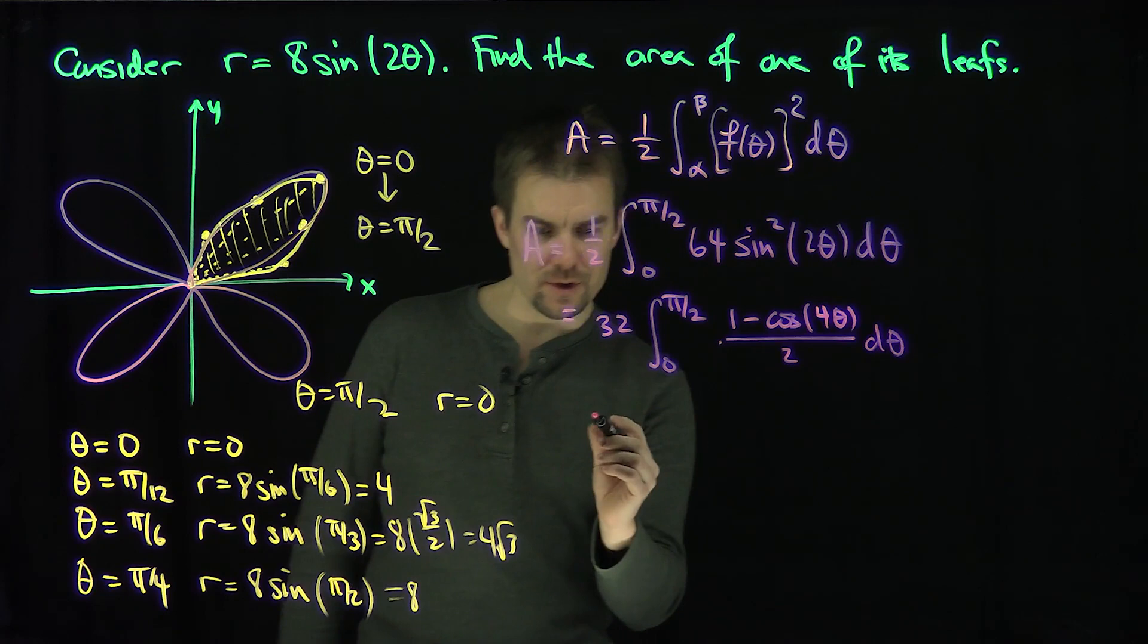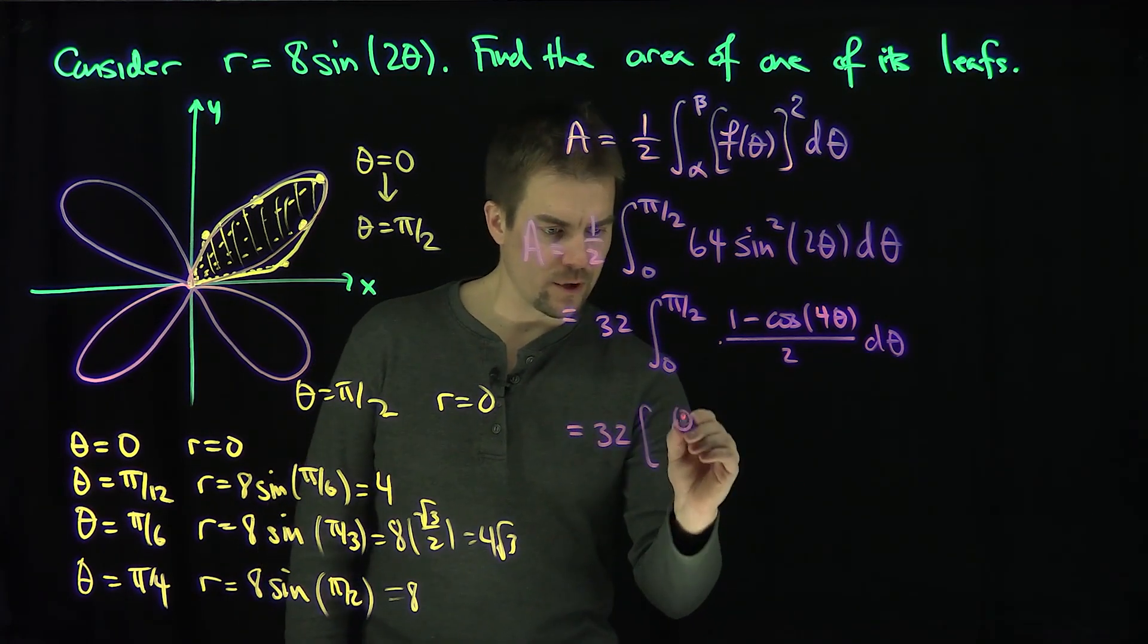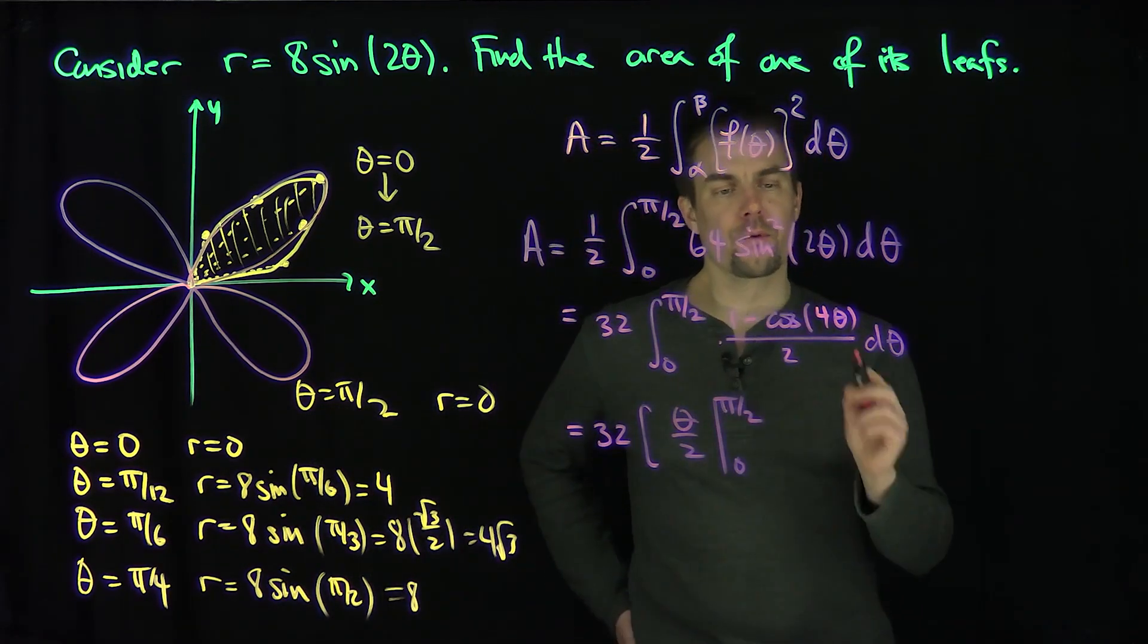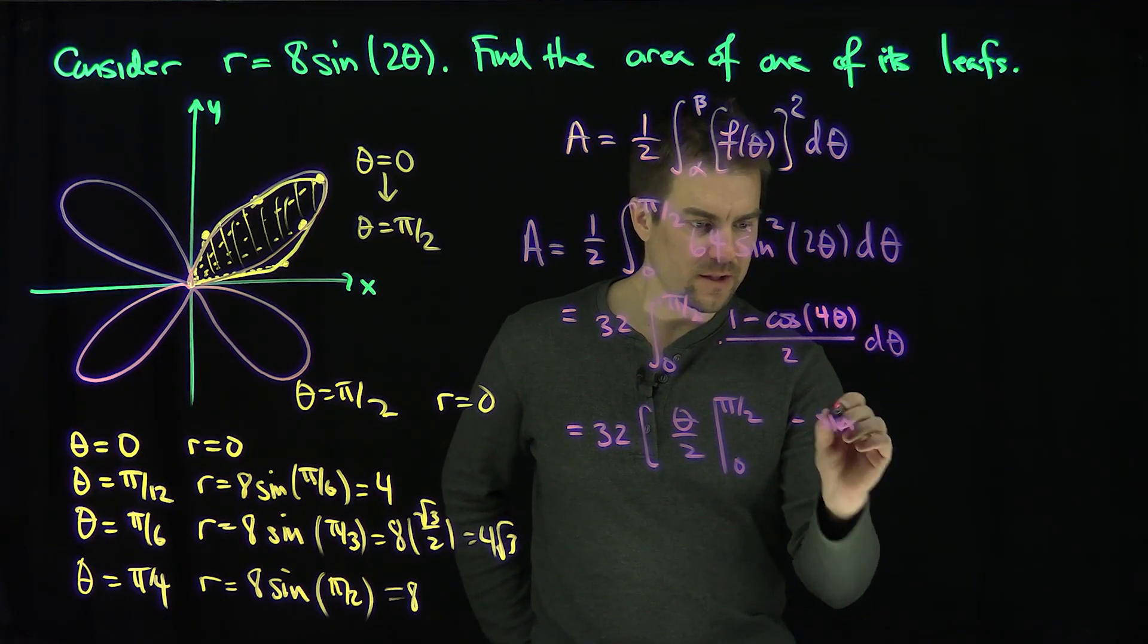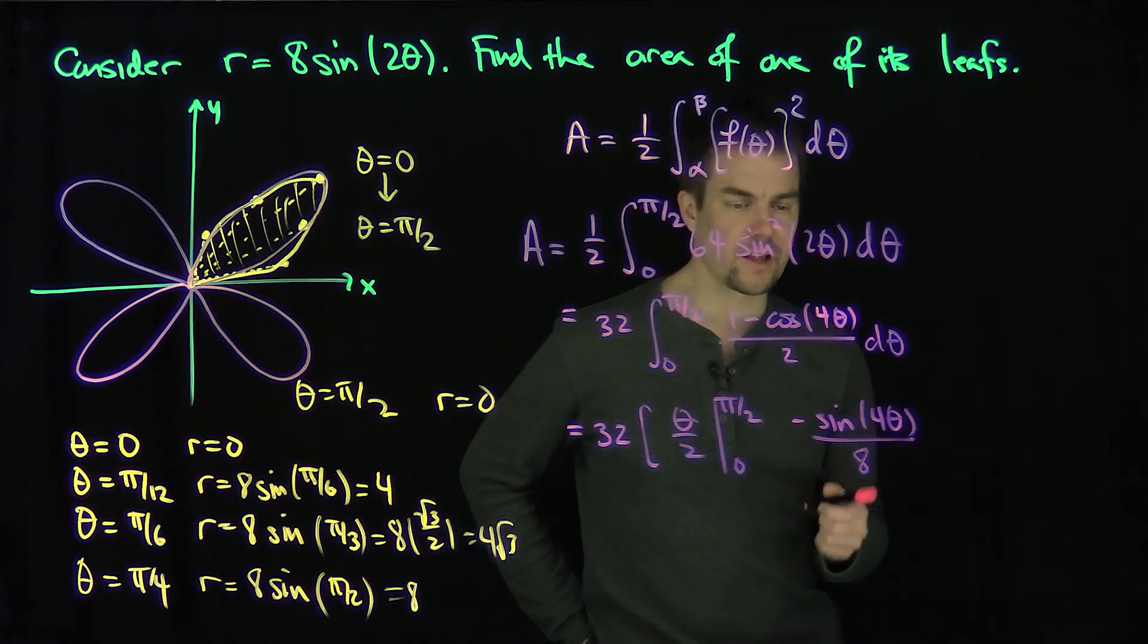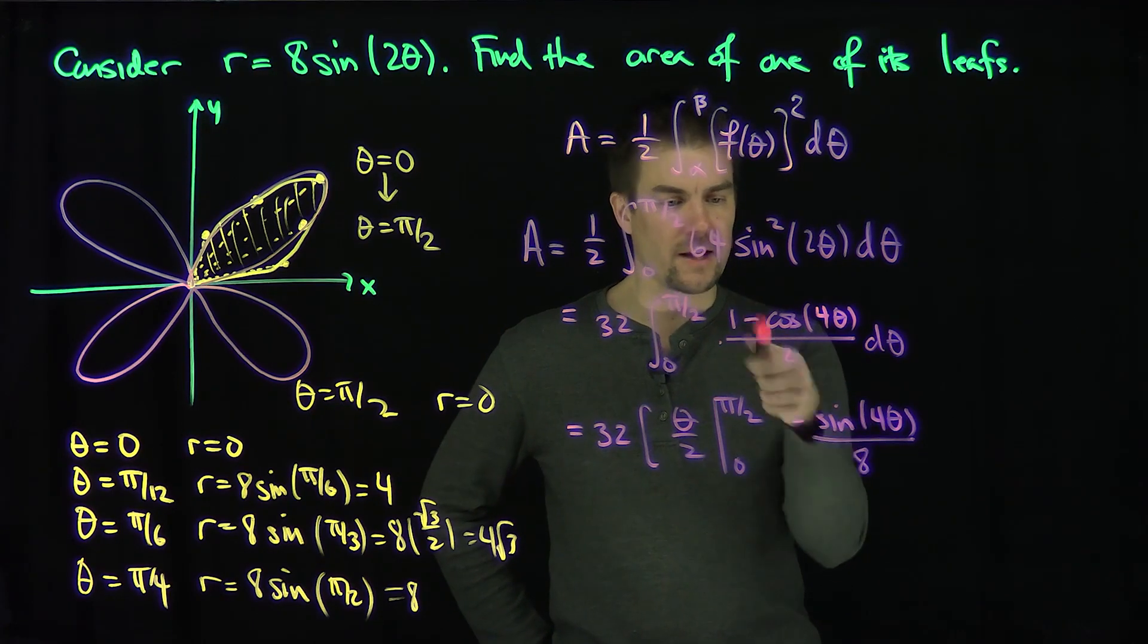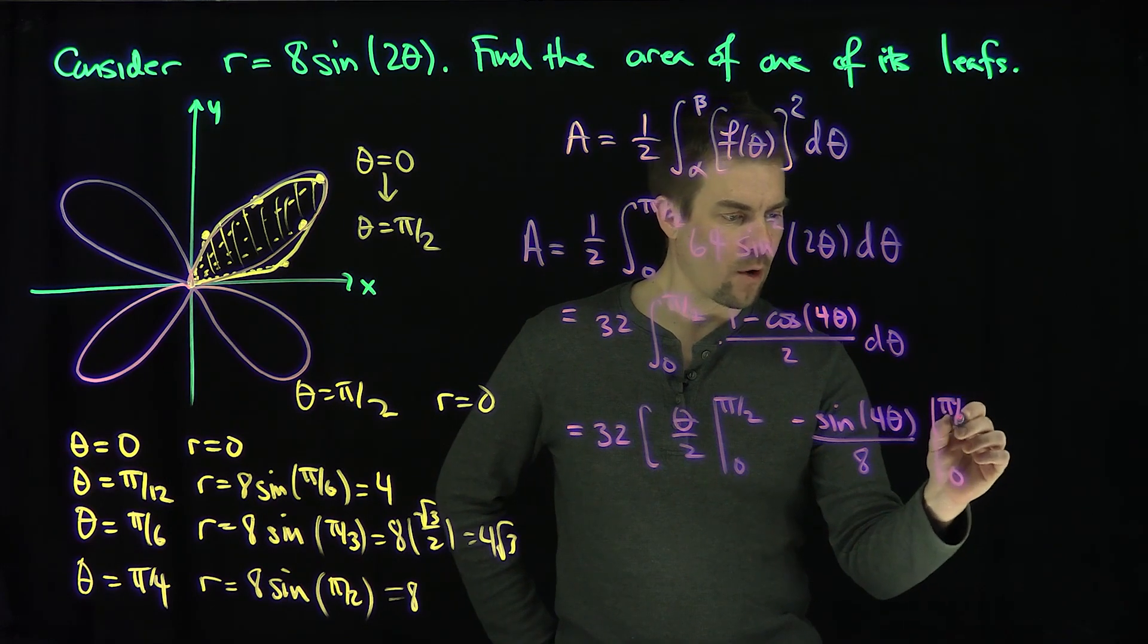So this integral is going to be easy to do. This is going to be 32 times theta over 2 from 0 to pi over 2. And then I have minus cosine of 4 theta over 2. I claim an antiderivative of this is negative sine of 4 theta over 8. Let's check that. The derivative of sine is cosine, so I get the negative cosine of 4 theta. And then 4 comes out, so 4 over 8 is 2. So that works. Again, theta goes between 0 and pi over 2.